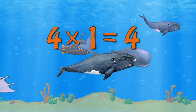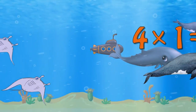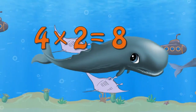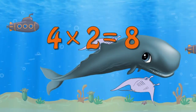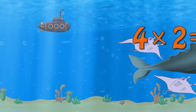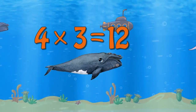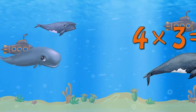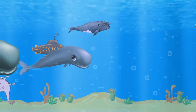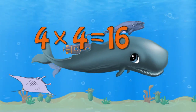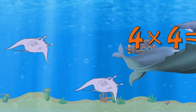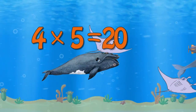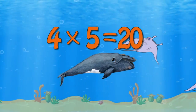Four times one is four. Four times two is eight. Four times three is twelve. Four times four is sixteen. Four times five is twenty.